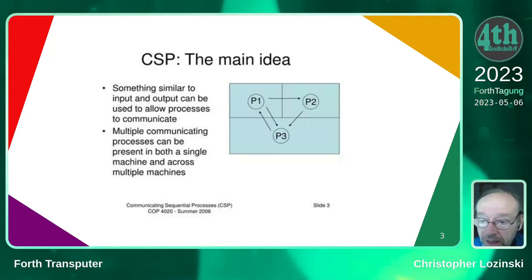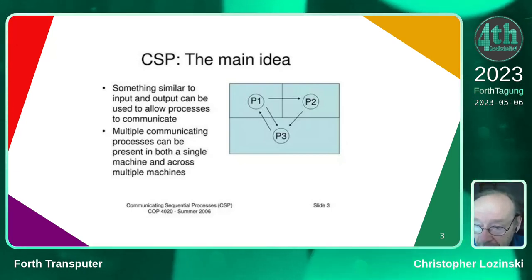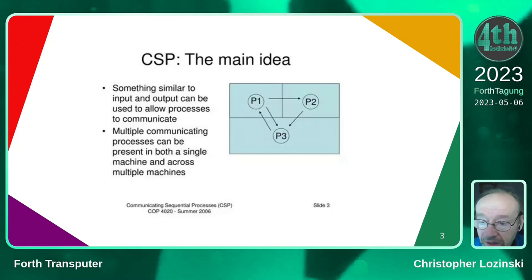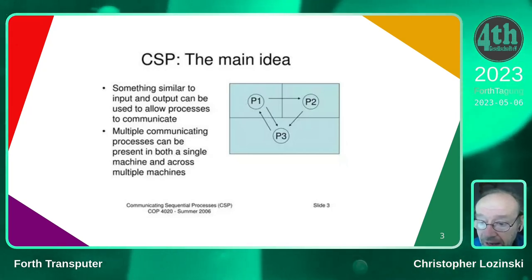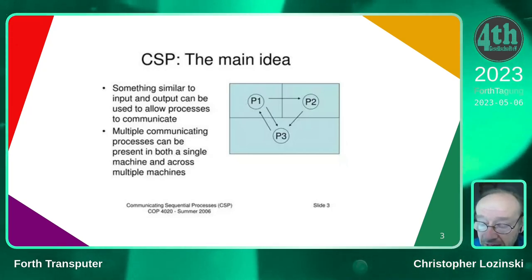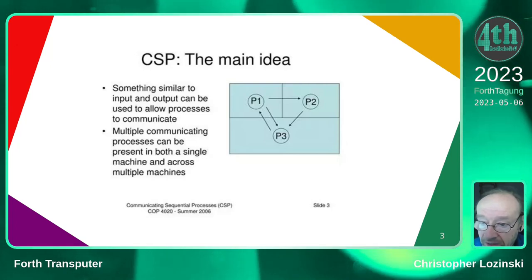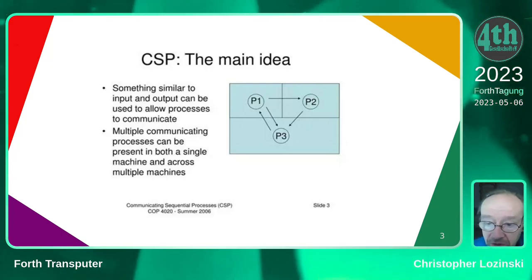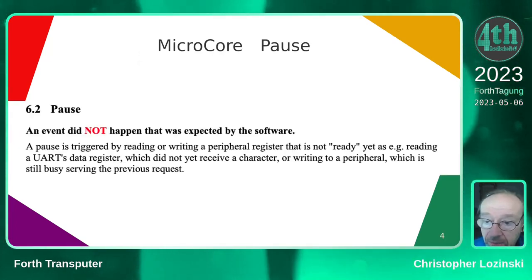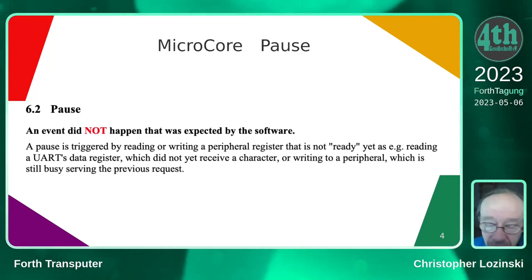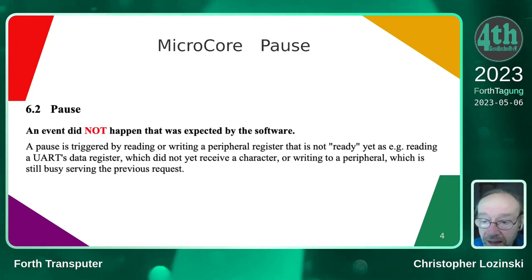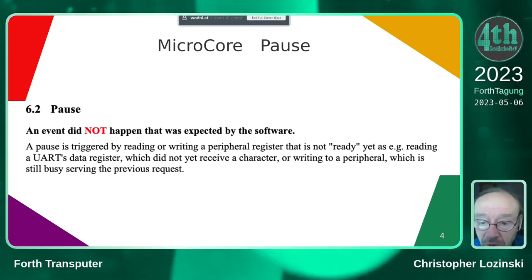So what are communicating sequential processes? You can have multiple processes either on a single computer or on multiple computers, and they have dedicated channels between processes, and then data flows between those channels. I was really pleasantly surprised to see that the micro core has hardware support for communicating sequential processes.